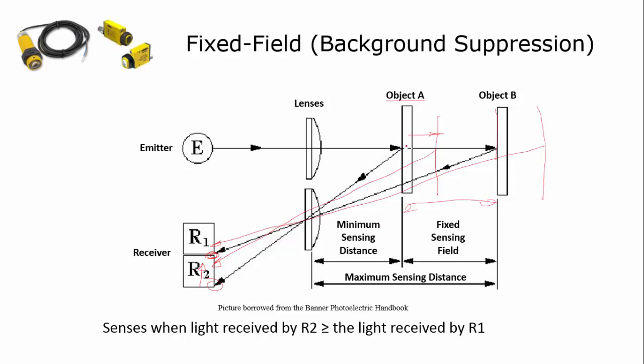It has a minimum sensing distance, so the object has to be this far away from the lens before it can sense the object. And it has a maximum sensing distance.